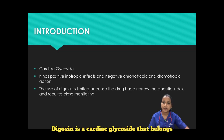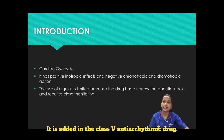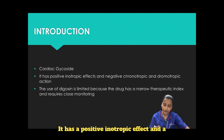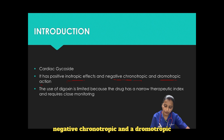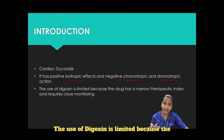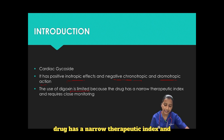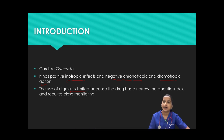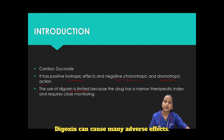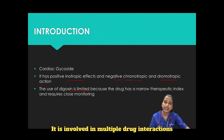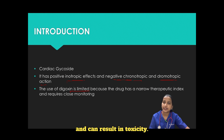Digoxin is a cardiac glycoside that belongs to the digitalis class. It is placed in the class 5 antiarrhythmic drugs. It has a positive inotropic effect and a negative chronotropic action. The use of digoxin is limited because the drug has a narrow therapeutic index and requires close monitoring. Digoxin can cause many adverse effects, is involved in multiple drug interactions, and can result in toxicity.